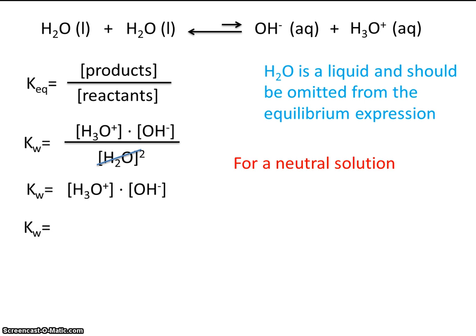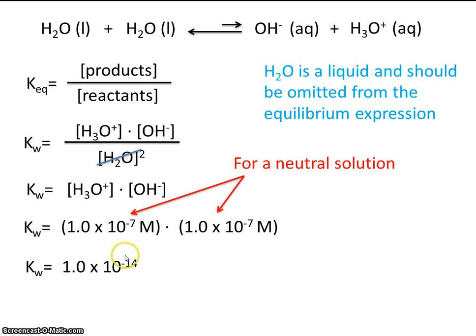Now as it turns out, for a neutral solution, we know what the concentrations are. The concentration of hydronium ion is 1 times 10 to the -7 M, and the concentration of hydroxide ion is the same thing, 1 times 10 to the -7 M. Now remember, this is only true for a neutral solution. So if we multiply the two of these together, our equilibrium constant is 1.0 times 10 to the -14.